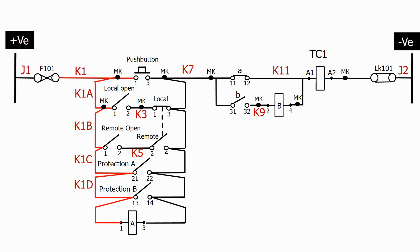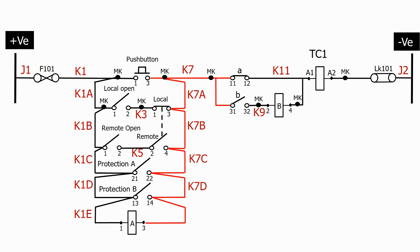And finally K1E. Similarly for the K7 loop, we'll get K7A, K7B, K7C, K7D, and finally K7E.